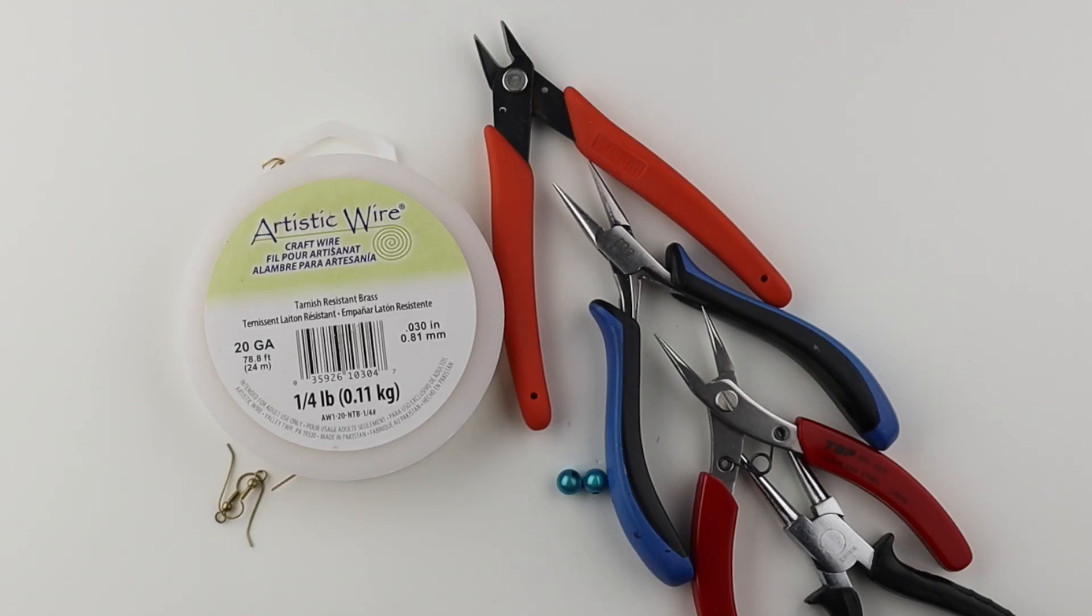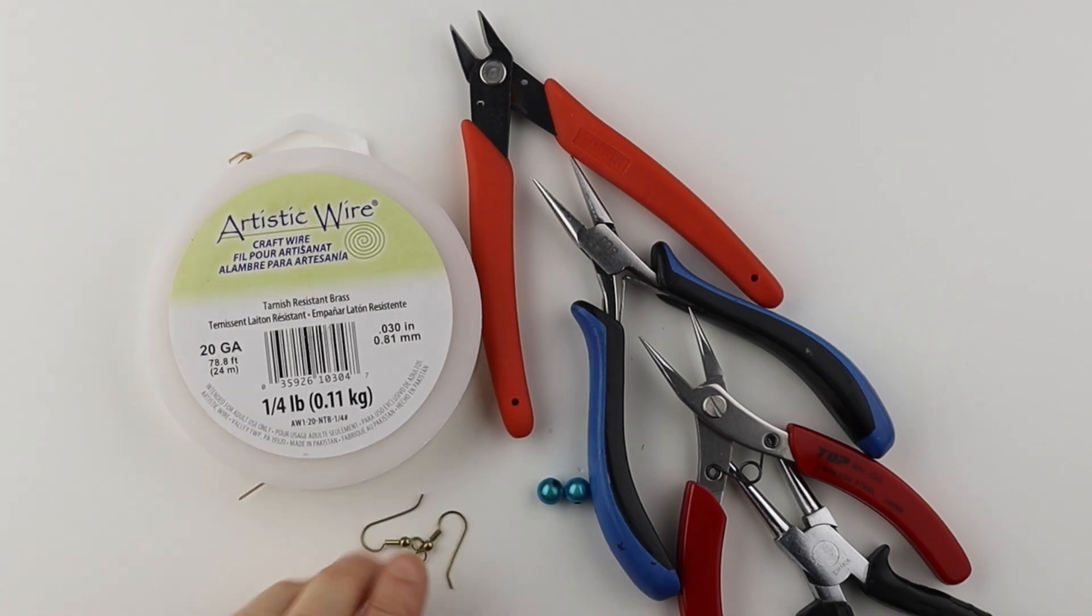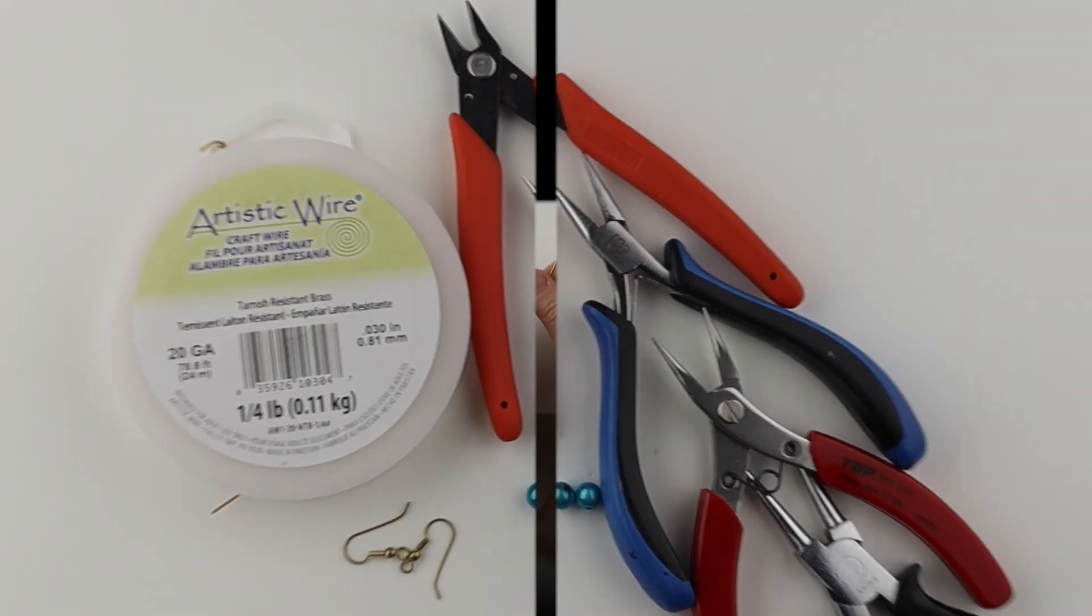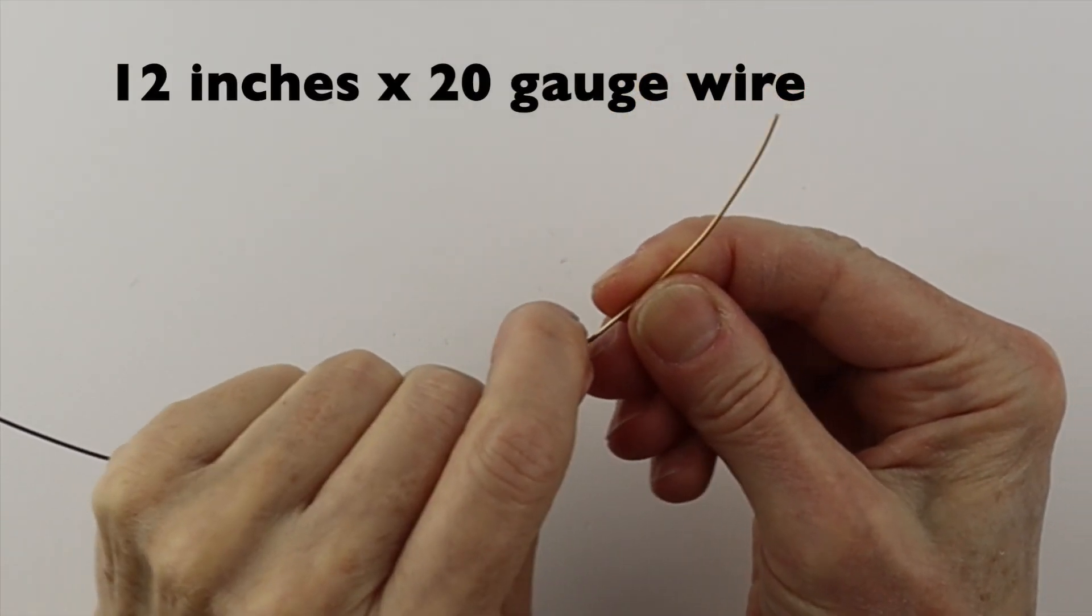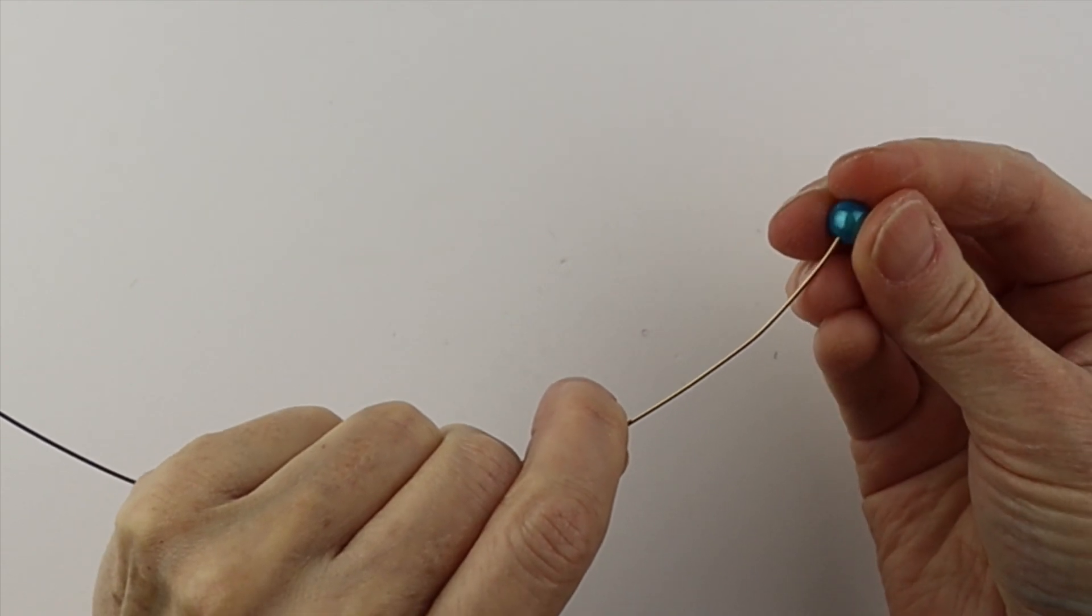What you're going to need for this project is 20 gauge wire. I'm using tarnish resistant brass. I have my earring hooks. I have eight millimeter miracle beads. Often I'll use cat's eye beads and I have my tools. So start with about a 12 to 15 inch piece of wire depending on how big your bead is.